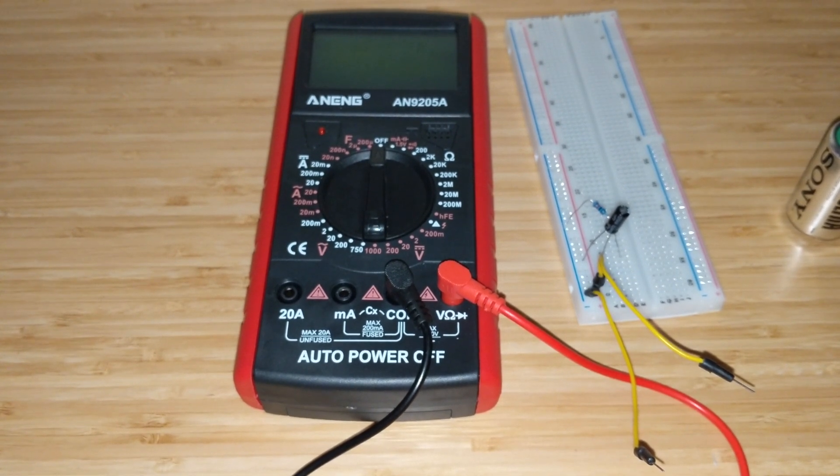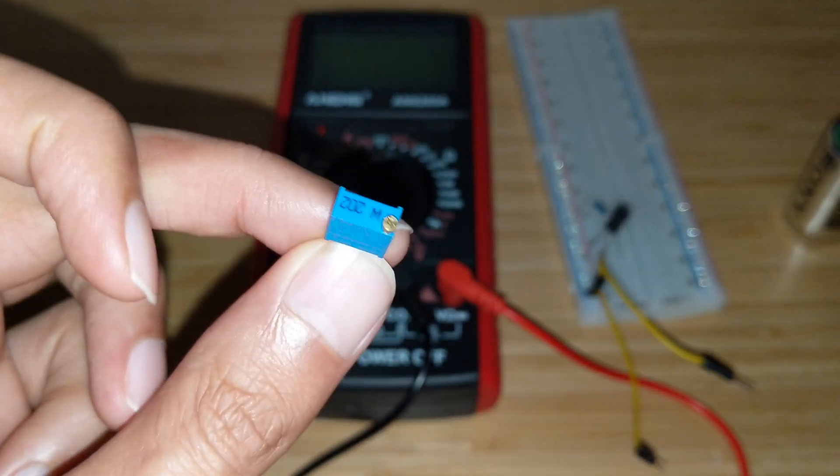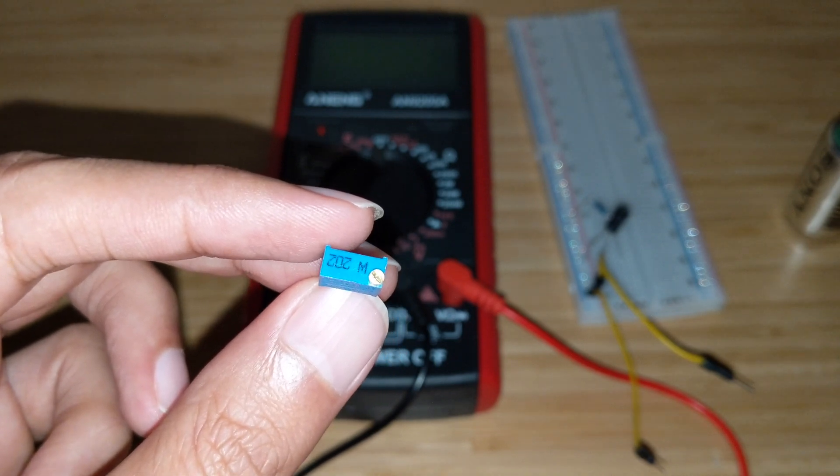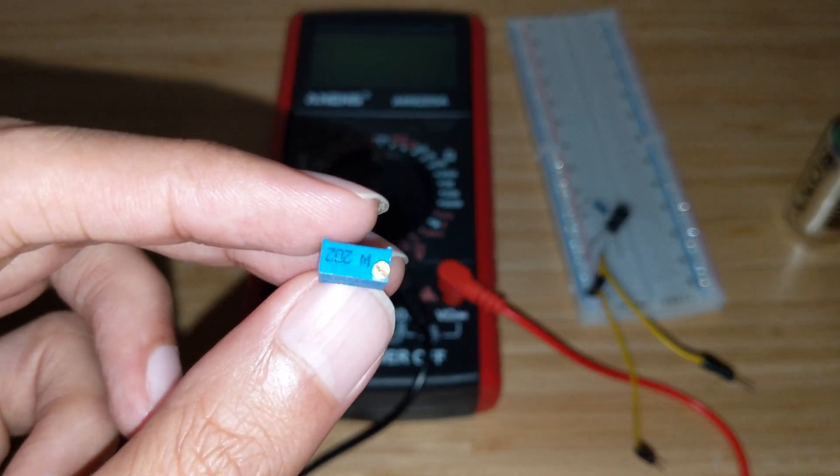So this is a potentiometer, and the screw that you see in the top, you can tweak the screw and that will basically allow you to change the resistance, which will help you basically adjust the readings.